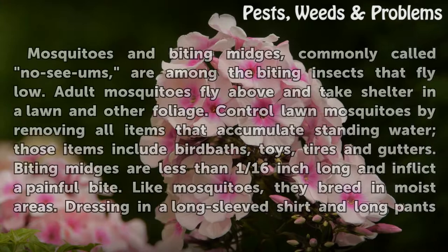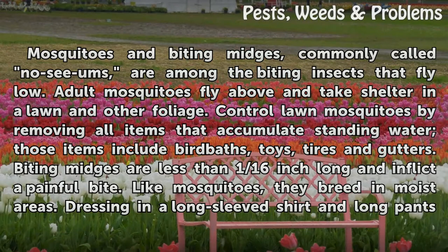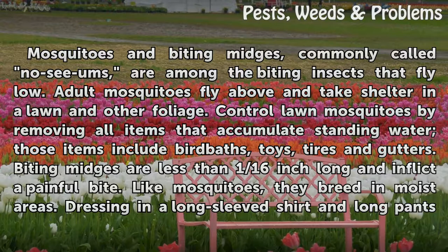Mosquitoes and biting midges, commonly called no-see-ums, are among the biting insects that fly low. Adult mosquitoes fly above and take shelter in a lawn and other foliage. Control lawn mosquitoes by removing all items that accumulate standing water, including bird baths, toys, tires, and gutters.